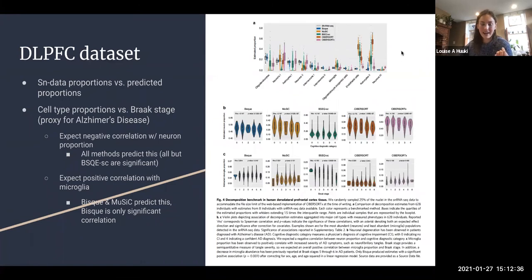They do a similar breakdown for the DLPFC dataset. The single nucleus data proportions versus the predicted proportions at the top here, again single nucleus in gray and then the other methods in other colors. Again similar pattern where Bisque is usually tracking with the single nucleus proportions, and we get some from the other methods that are kind of off the mark.